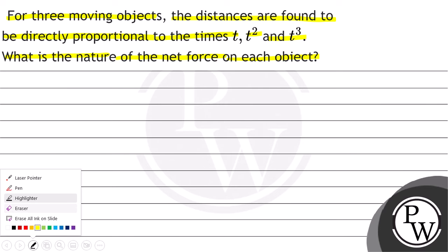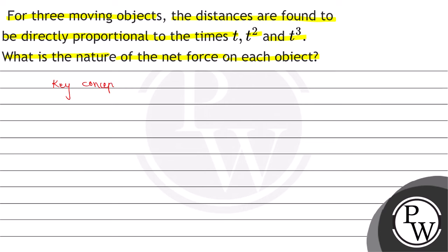Firstly, we will see the key concept of this question. The key concept is that we will find out the acceleration, which will be equals to differentiation of the velocity. And this velocity part will be calculated with the help of the distance, that is v = ds over dt. With this, we will solve our question.